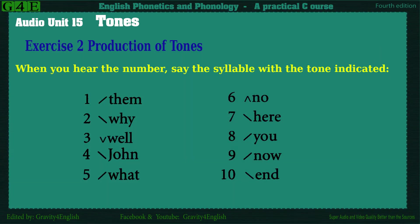Exercise 2: Production of tones. When you hear the number, say the syllable with the tone indicated. One. Them. Two. Why. Three. Well. Four. John. Five. What?